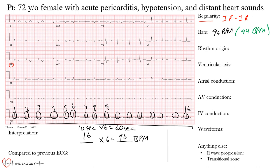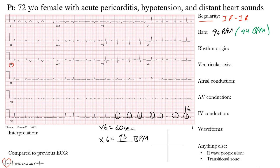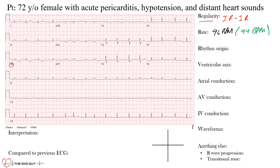Next we look at rhythm origin — is it coming from an atrial source or the sinus node, a junctional source in the AV node, or a ventricular source? We have narrow complexes, which suggest a supraventricular rhythm, meaning it's coming from above the ventricles. In addition, we have complexes that are not preceded by P waves.